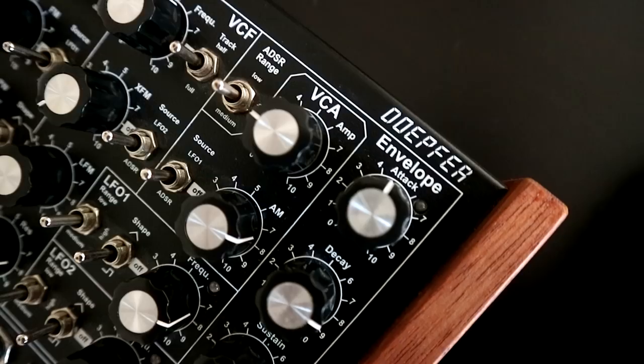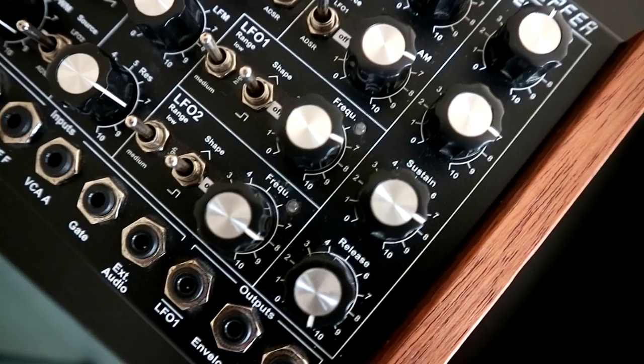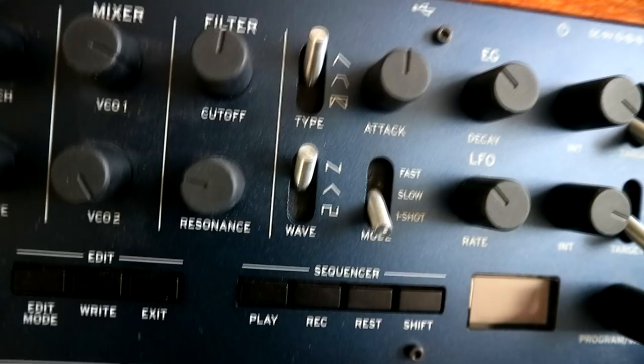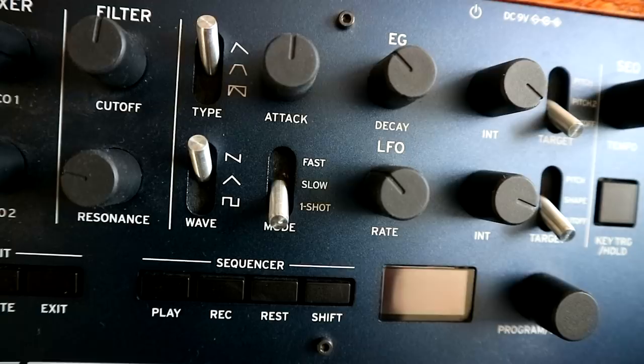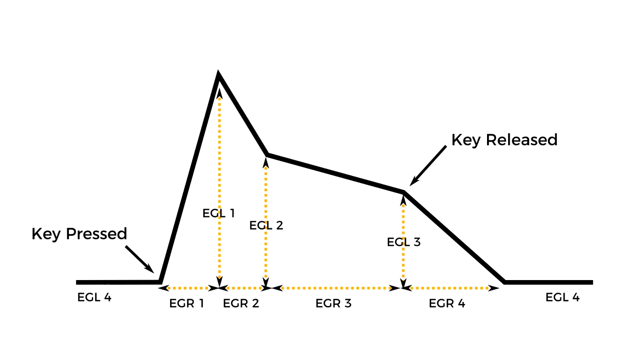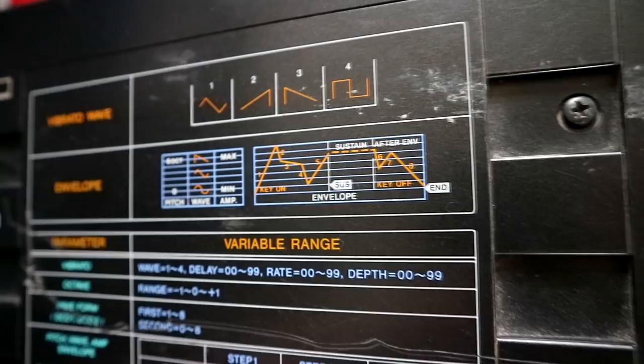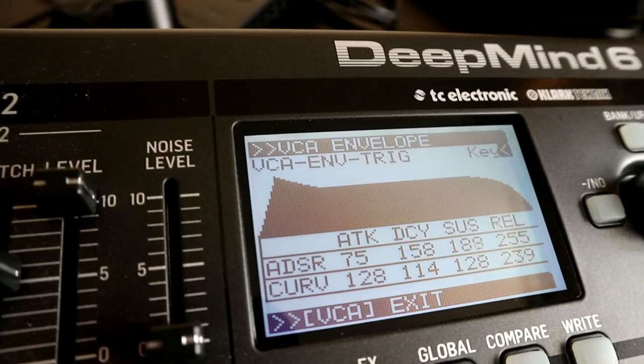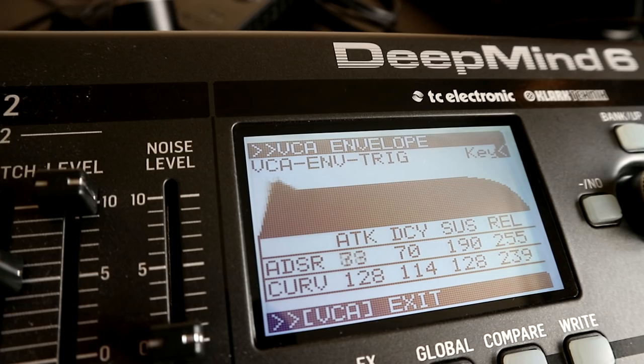Envelopes on synthesizers come in many forms. These range from the simple two-part attack and decay envelopes like we see on the Korg Monologue, up to the complex multi-stage envelopes that we find on the DX-style FM synths. There are even these eight-stage behemoths that you find on the old Casio CZ series — I mean, look at this thing. Leaving those aside, far and away the most common form of envelope that we see on synths is the trusty ADSR envelope.